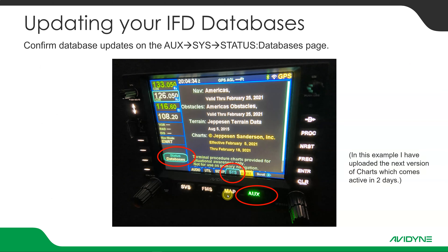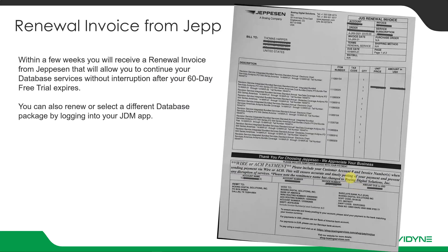Then you can come over to the AUX menu once it starts up, go to the system tab, go to status, and push that button until it shows databases. Here you can see now I've got the Americas data, February 25th through February 25th. I've got obstacles. I've got JEP terrain, which doesn't change that often so we don't update that on a regular basis. And then the charts, which come effective in two days. We've got our nav databases updated and we're ready to go flying.